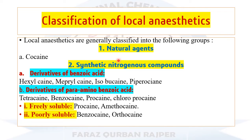Classification of local anesthetics: they are classified into various classes depending on their source. Some local anesthetics are obtained from natural sources — that is, plant sources — for example, cocaine. Besides this, there are many synthetic local anesthetic agents synthesized by chemical substitution at different chemical compounds. Some are nitrogenous compounds, meaning their structure contains nitrogen, whether present in their cyclic ring or in their chain structure.